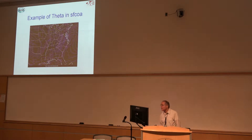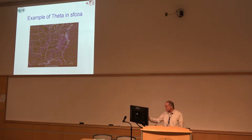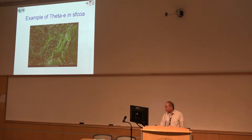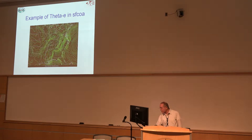Here's an example in our surface objective analysis in NMAP up at SPC. This is at 18Z on a particular day, and this is the theta analysis. You can start to see some gradients — here's a gradient back here, here's a gradient in through here, something's probably going on in there. When we look at theta-e, which includes moisture, I've got a different type of air mass in through here, and then another gradient in through here, and maybe something across here.